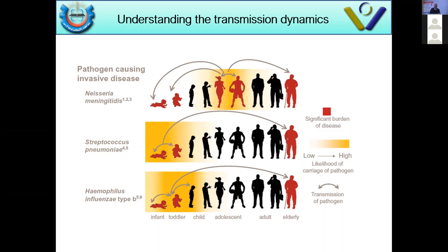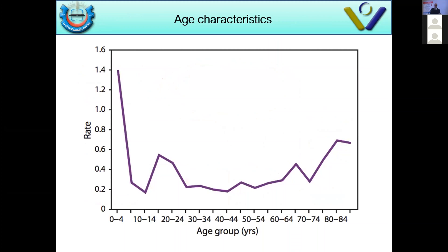There is significant nasal carriage of Neisseria meningitidis, which is why chemoprophylaxis is indicated for all contacts of a Neisseria meningitidis case — different from Streptococcus pneumoniae and Haemophilus influenzae. The age peaks are early life, late life, and around college age, 13 to 17 years.